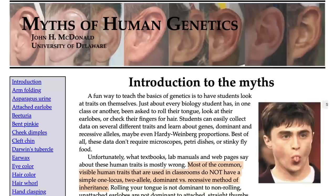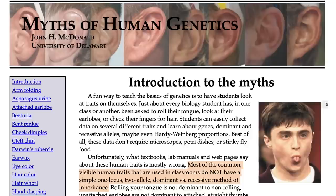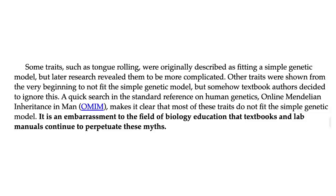Scratch these ideas out of your head — they don't belong there, they are incorrect. What I'm going to do is talk about some examples of bad genetics. Several of them are taken from this site, which I highly recommend: Myths of Human Genetics by John MacDonald at the University of Delaware. What he has done is gone through typical textbook examples and actually tested them, looked them up in the literature, and found the fallacies all over the place. As he says, most of the common visible human traits used in classrooms do not have a simple one-locus, two-allele, dominant versus recessive method of inheritance. So that really basic stuff you may have learned in high school — it's true for a few special cases but does not apply to most of genetics.